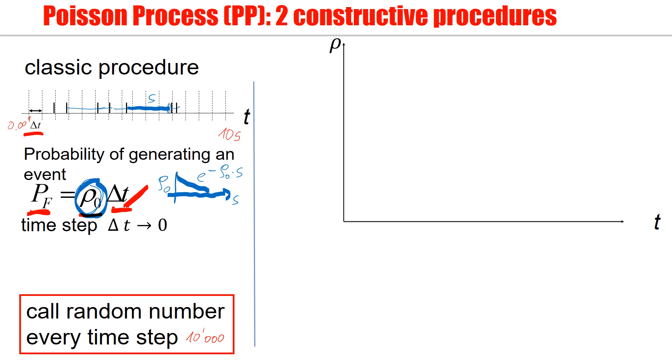Moreover, we may want to consider very short time steps. The more general case is that we have an inhomogeneous Poisson process. And the main difference is that now this stochastic intensity is time dependent. So what can we do in this case? And this is what I will now explain on the right hand side.